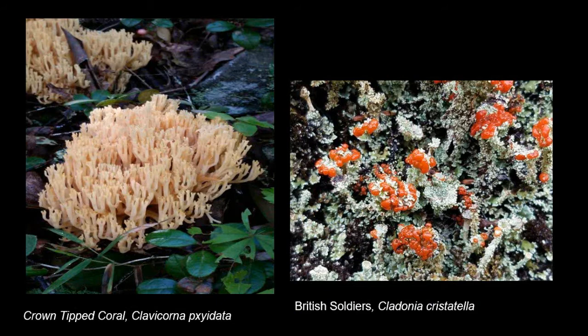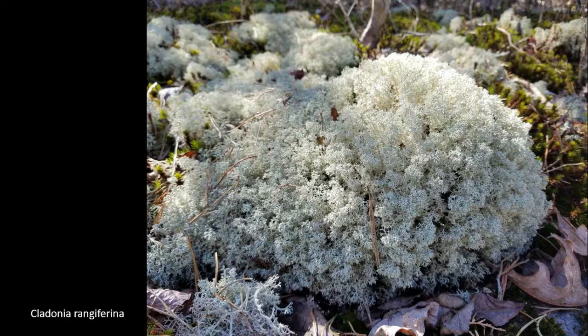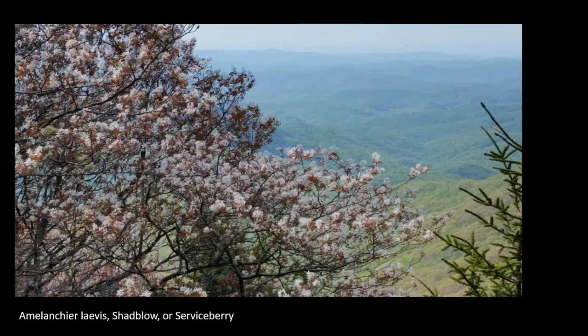Small things like crown tip coral fungi and British soldiers lichen are things we look for — the small things, seen and unseen. Cladonia rangiferina, called reindeer moss, is everywhere in our landscape, but how many people slow down to look at it? Even in the driest of droughts, if you put your hand underneath it, it's always wet. These are things we look for and adopt in our landscape thinking.